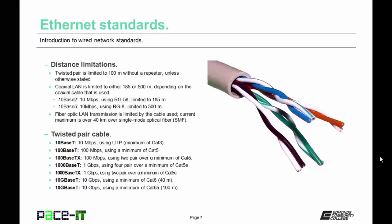Then there's 10GBaseT, which is 10 gigabits per second networking using a minimum of CAT6, but it's only good for 40 meters. Finally, there's also 10GBaseT at 10 gigabits per second using a minimum of CAT6a cabling, and that's good for up to 100 meters.